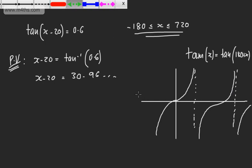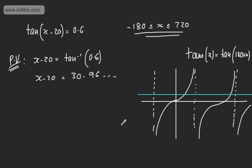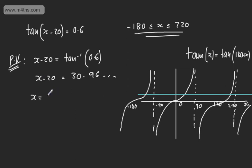The principal value for x minus 20 is 30.96 degrees. So x equals, adding 20 to both sides, 50.96 degrees, plus n multiples of 180. To get subsequent solutions, we add 180 each time. Listing: x minus 20 equals 30.96, then 210.96 by adding 180, then 390.96; and going the other way, subtracting 180 gives minus 149.04.